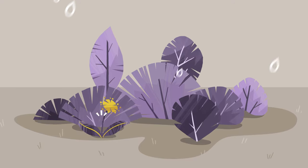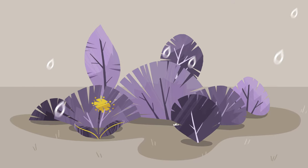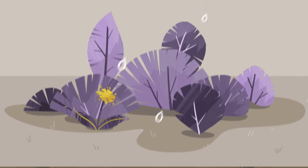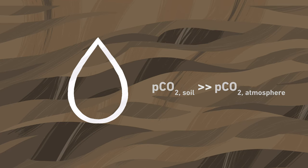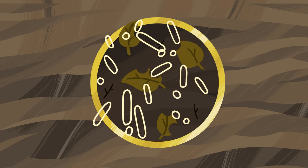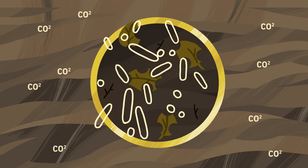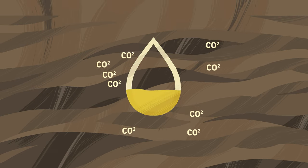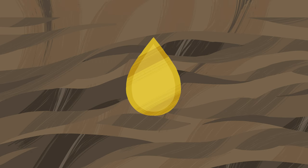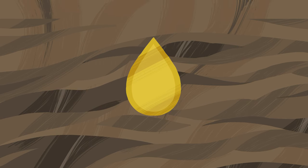Rain falls on the surface above a cave, and the rainwater penetrates the soil. This rainwater is in chemical equilibrium with the CO2 concentration of the atmosphere. In soils, however, the CO2 concentration is much higher than in the atmosphere. This is because huge amounts of microbes decompose plant material and fill the soil pores with air. As the rainwater percolates through the soil, it starts equilibrating with soil air by taking up CO2. Thus, the water becomes acidic.